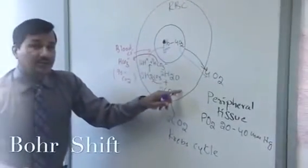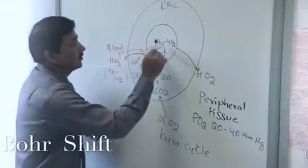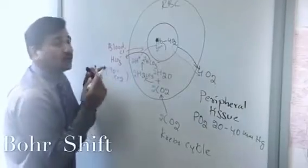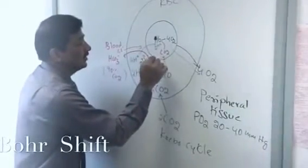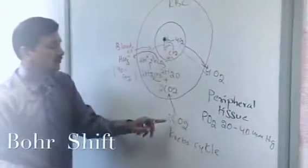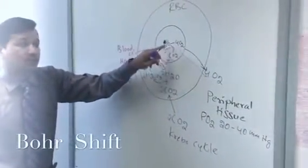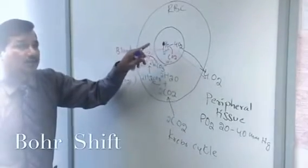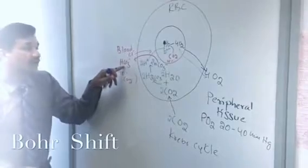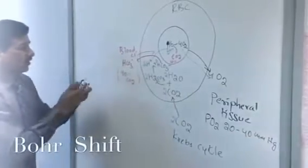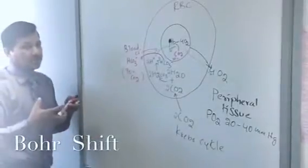Ten percent of the carbon dioxide directly binds to the hemoglobin molecule — particularly the amino-terminal side of the hemoglobin molecule binds with carbon dioxide. That is only 10%, so 10% of peripheral tissue carbon dioxide is carried by direct binding to hemoglobin. Now, 90% of the carbon dioxide is carried in the form of bicarbonate. Let's take this RBC back to the lungs, because venous return will occur.